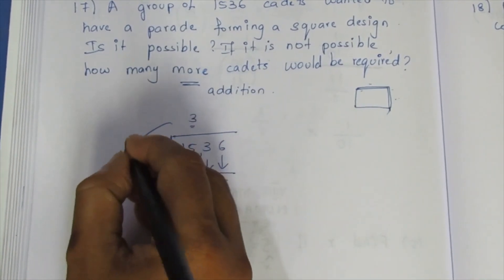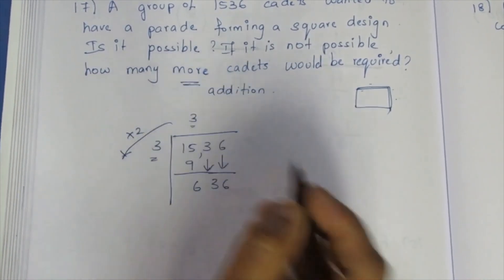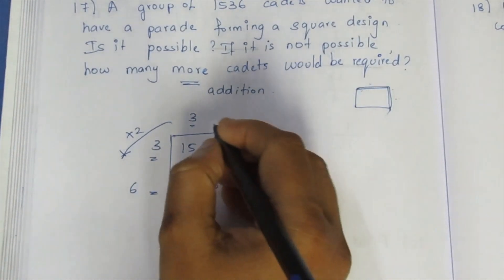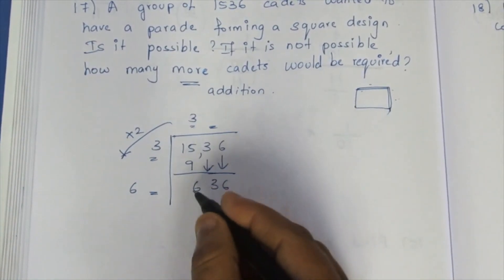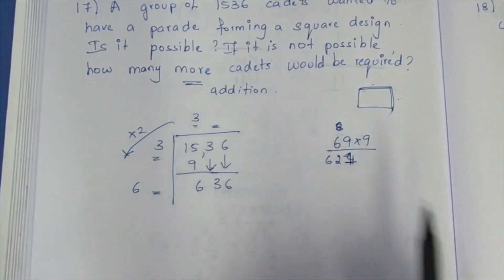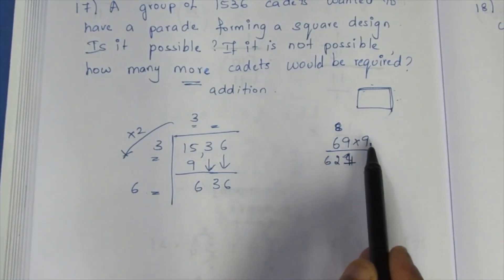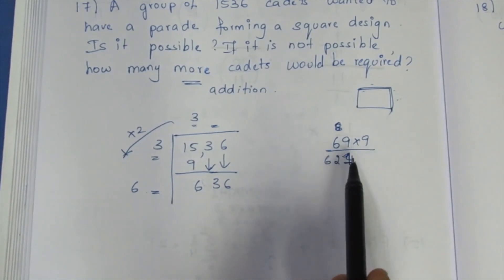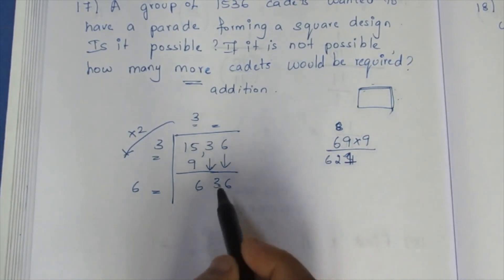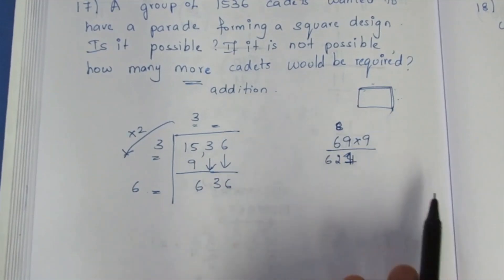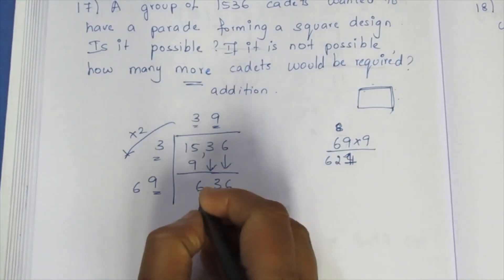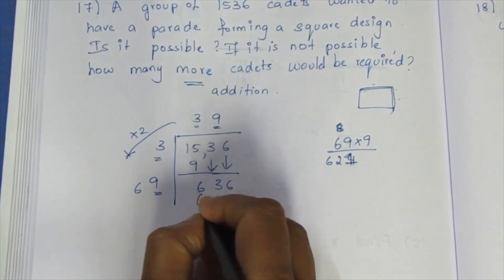We are using 6 and 6 — they are the same — so we try to make a number: 69 into 9 is 621. This is a smaller number, so this gives us 9. Thus 99 into 9 is 621.